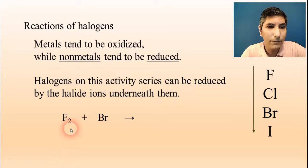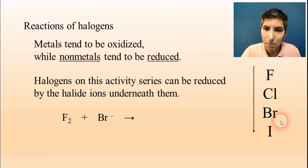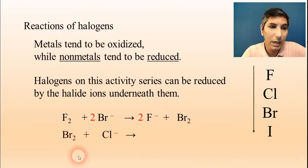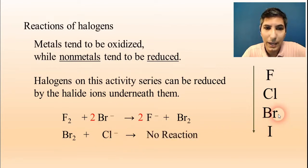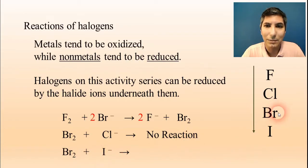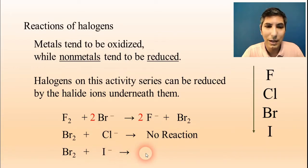For example, if we have F2 fluorine gas being reacted with bromine ions, that's going to work because fluorine can be reduced by pretty much any other halogen since fluorine is on top. So we're going to have fluoride, and then bromine is going to be the other product — you want to balance that. On the other hand, if you have bromine liquid being added to chloride ions, a halogen cannot be reduced by the ions that are above it on the hierarchy, so that won't work. But bromine liquid being added to iodide ions will work, because bromine is above iodide on the list. So we're going to make bromide ions and then iodine solid, I2 — and of course you want to balance that equation.